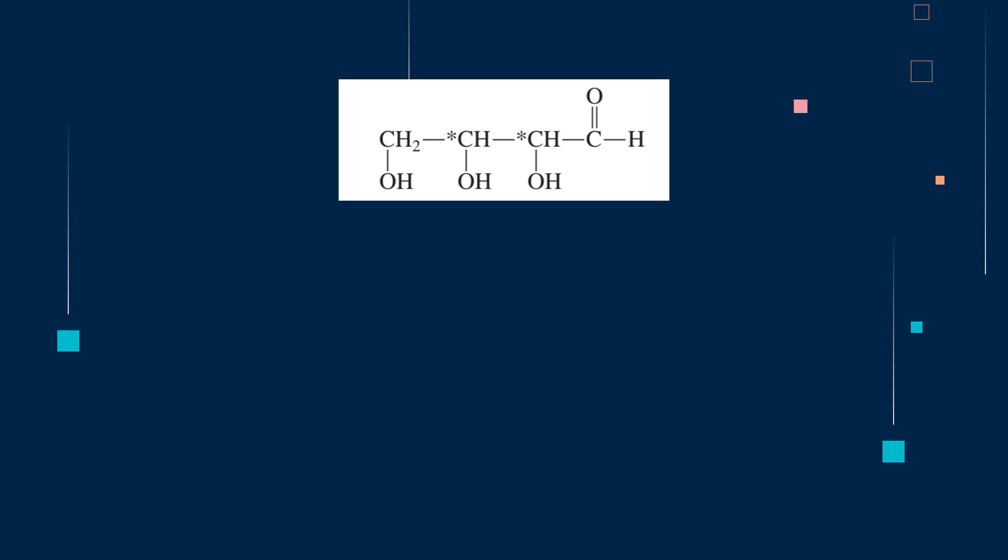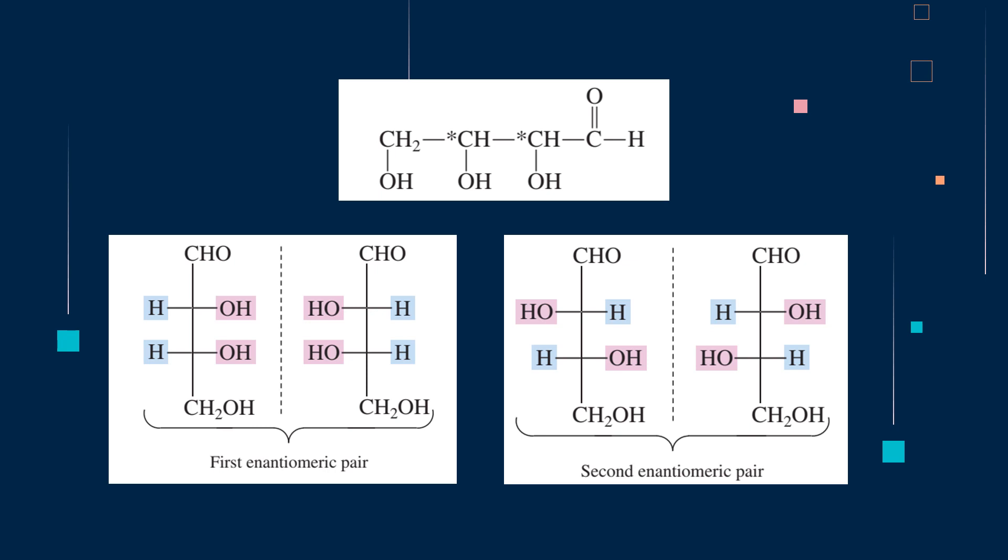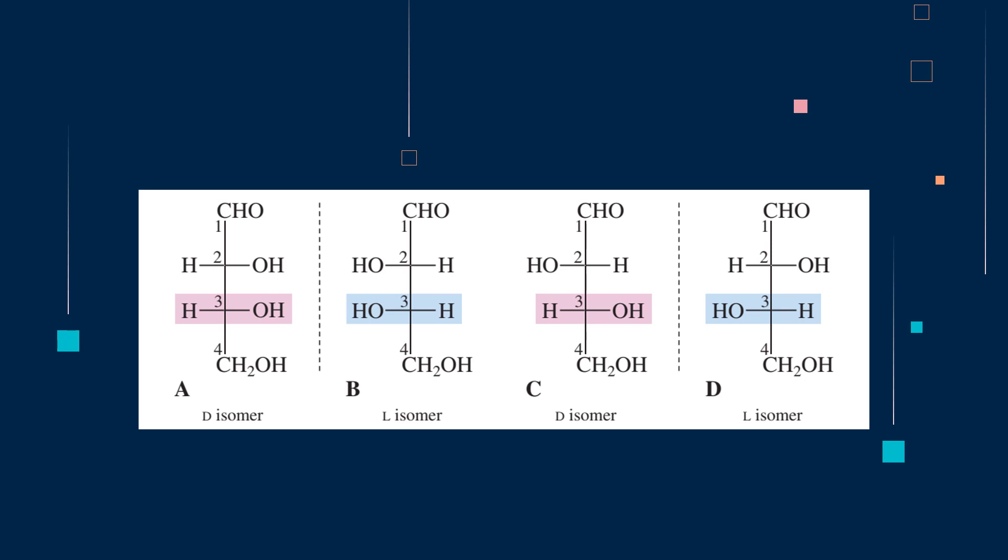Another example would be this compound, 2,3,4-trihydroxybutanal, a monosaccharide that has two chiral centers as indicated by the asterisk. This means that this monosaccharide has four stereoisomers or two pairs of enantiomers. If we would look at each monosaccharide from this pair of enantiomers, the carbon chain is numbered starting at the carbonyl group end of the molecule, which is carbon number 1. And the highest numbered chiral center is used to determine the D or L configuration. If compounds A and B are enantiomeric pair, the same with compounds C and D, which are also enantiomeric pair, what do you think is the relationship between compound A and C? They are diastereomers.